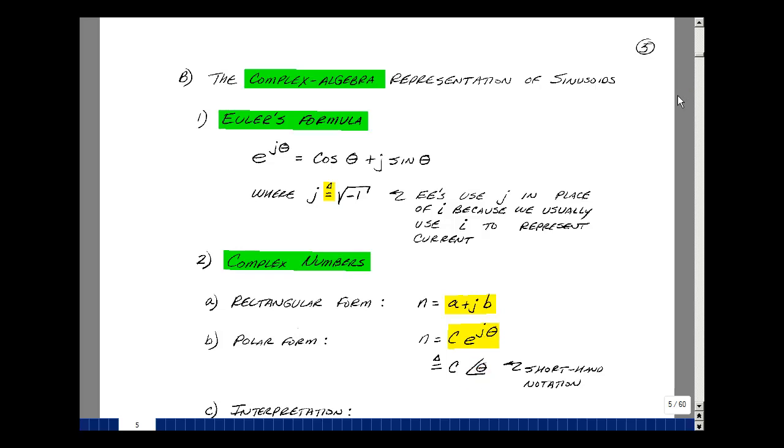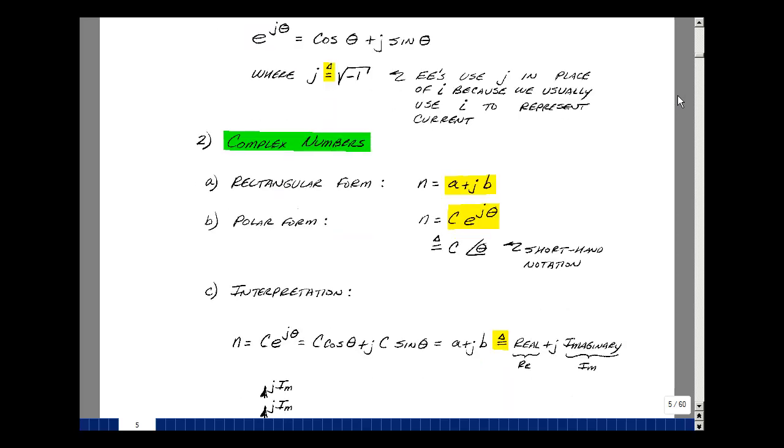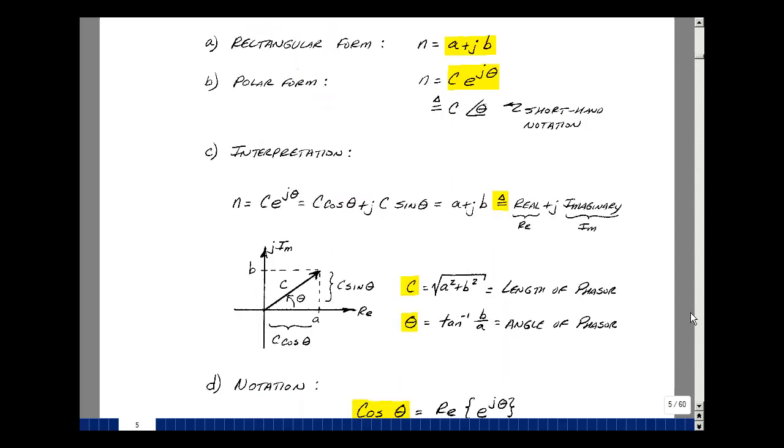Let me show you how to interpret these equations. Suppose you have a complex number n that's equal to c times e to the j theta. We'll multiply c times our Euler Identity and get c times the cosine of theta plus c times the sine of theta. This then would be what we call a and then plus jb, or just in general, this is the real part and this is the imaginary part.